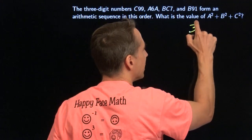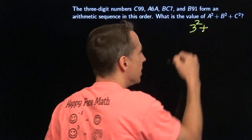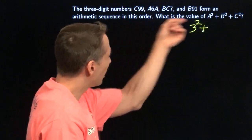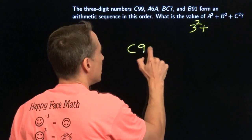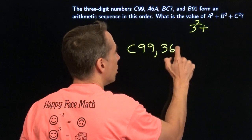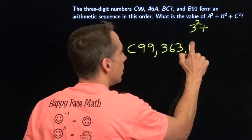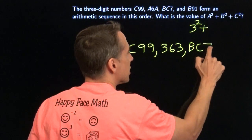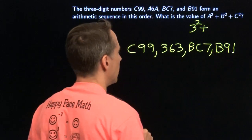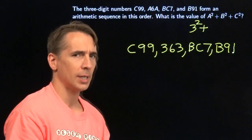That's awesome. We can go ahead and write that down. We've got a. A is 3. So that's going to be 3 squared plus whatever b squared is and whatever c squared is. Now let's go ahead and write this down. C, 9, 9. Put in our 3. 363. B, C, 7. And B, 9, 1. So we have a. Still don't know b. Still don't know c.